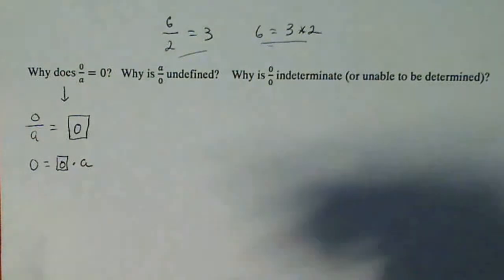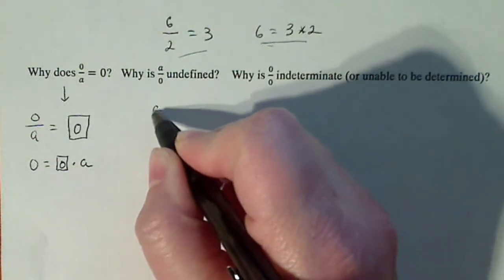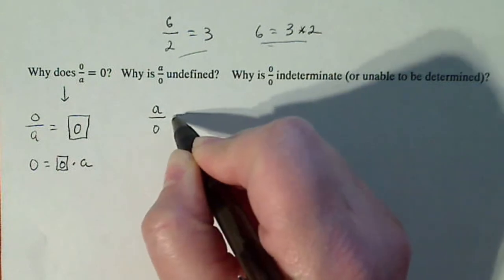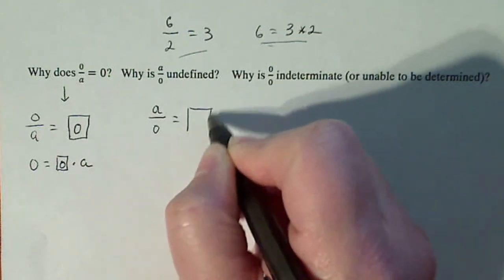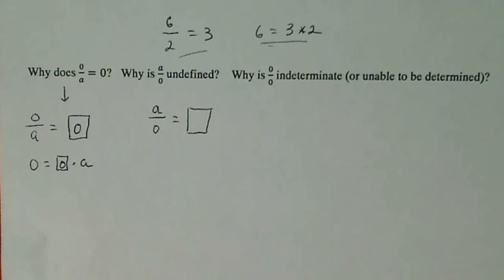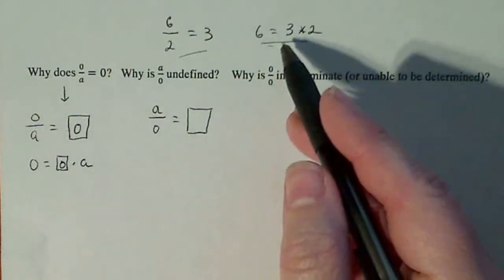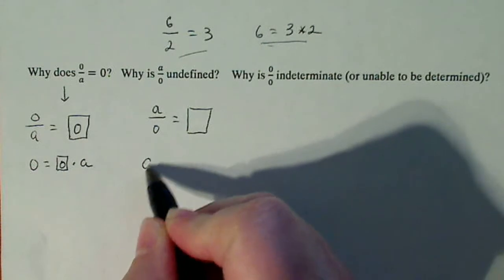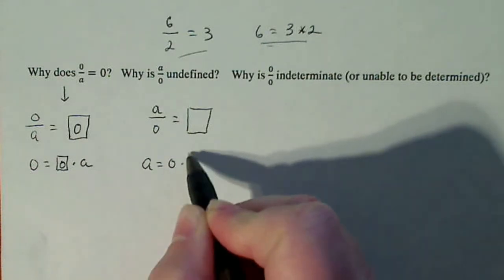Now, let's go to the next one. We're going to start with A over 0 is equal to box. And we're just going to pretend we don't know what the answer is, but we want to fill in the box. So let's go ahead and rewrite the division as multiplication. So A equals 0 times box.